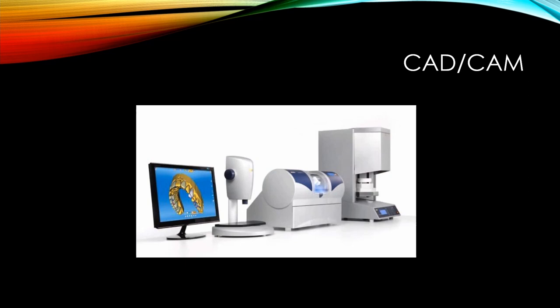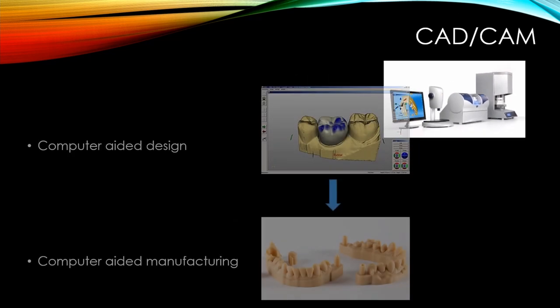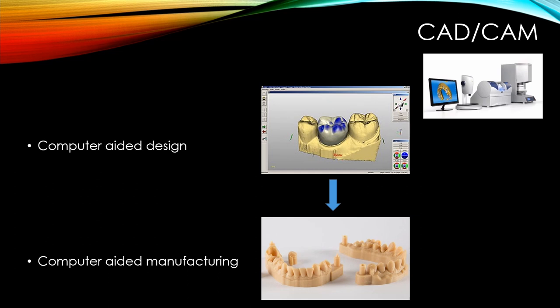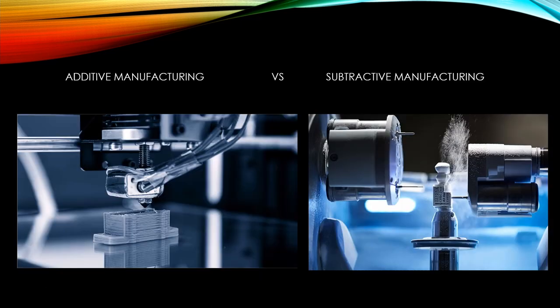We all know that 3D printing is part of CAD/CAM technology. CAD/CAM stands for computer-aided design and computer-aided manufacturing, and it uses the power of computers to design anything virtually and then manufacture that design into a physical object. We have two ways of manufacturing.